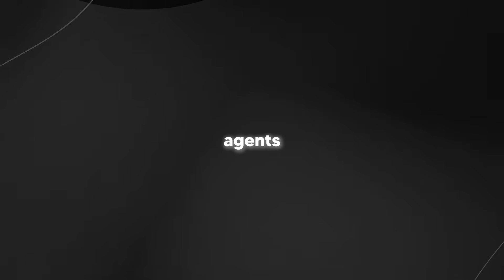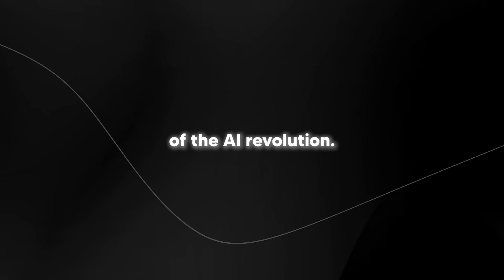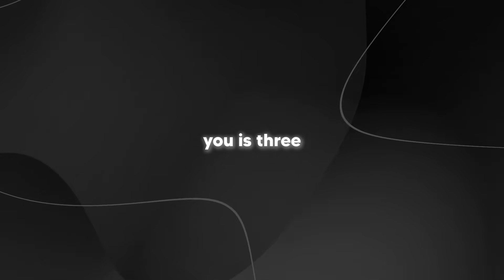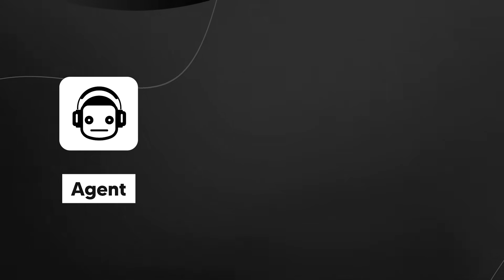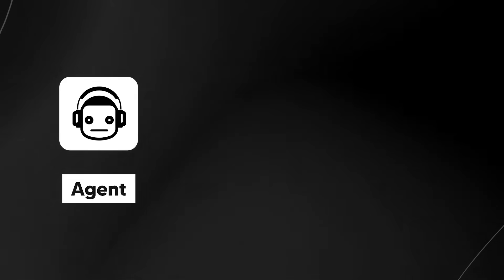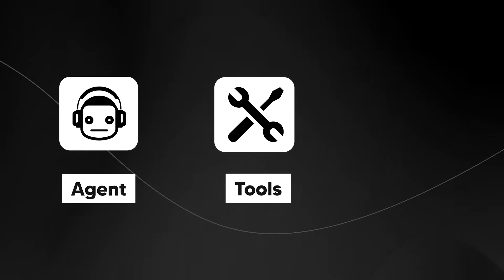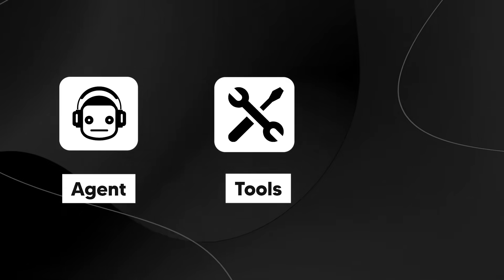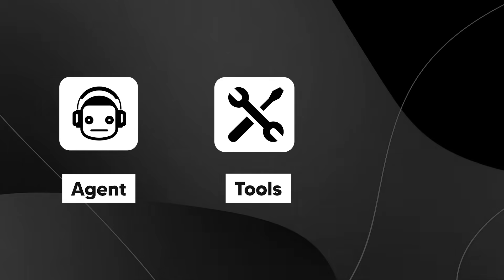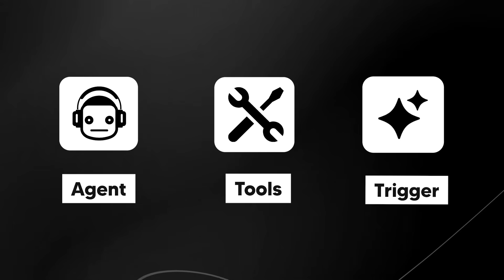Make.com just released AI Agents. In today's video I'll give you a full breakdown, even as a complete beginner, on how you can get started using AI Agents and take advantage of the AI revolution. This tutorial covers three key sections: how to create the AI Agent — the base agent, the model, and the instructions; how to create the tools the agent will use to get tasks done; and how to create a trigger so your agent autonomously does work for you.